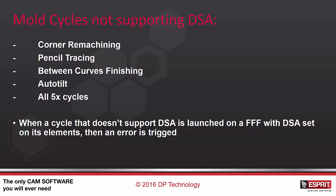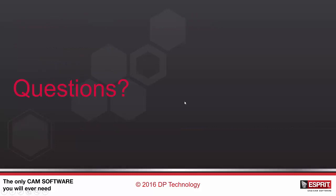When you try to apply an unsupported cycle on a freeform feature that has allowance values set, an error is triggered for the operation. This is all from my side — for any questions please feel free to contact us. Thank you!